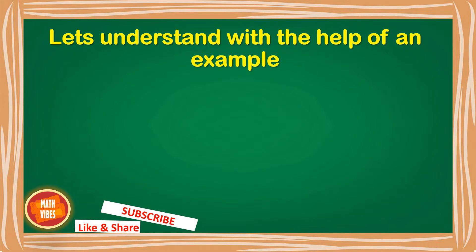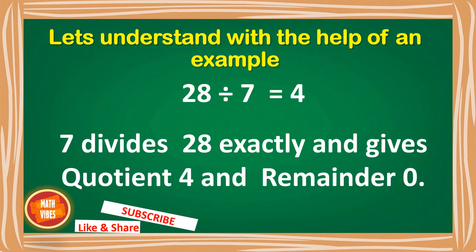Let us understand this with the help of an example. If I divide 28 by 7, you all know that it is divisible by 7 and the answer is 4 because 7 fours are 28. So 7 divides 28 exactly — the quotient is 4 and the remainder is 0.